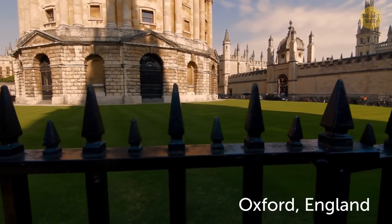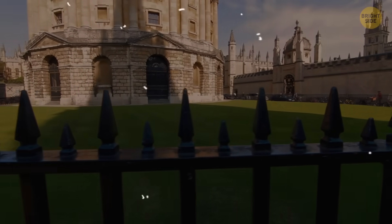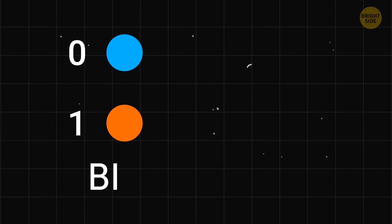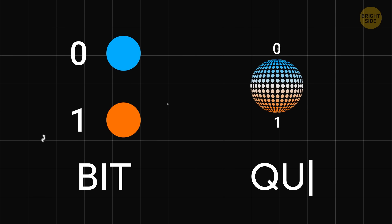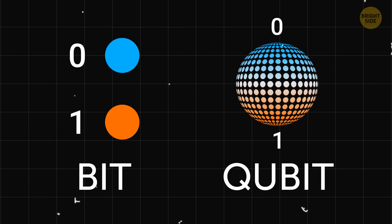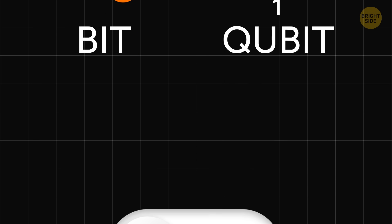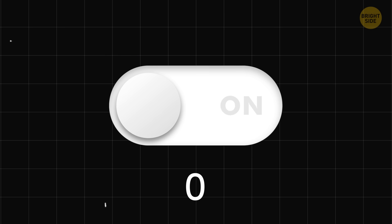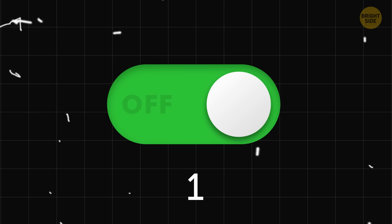So scientists at Oxford have learned how to teleport quantum information. Ordinary information consists of bits, while quantum information consists of qubits. And there's a difference. Imagine a small switch. When it's off, it means zero. When it's on, it means one. And an ordinary computer works with this information.